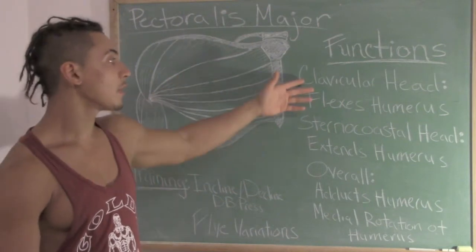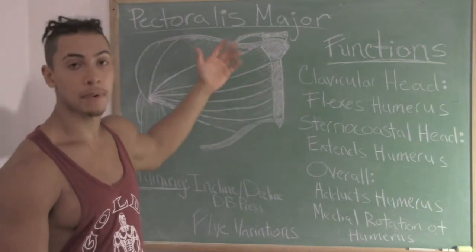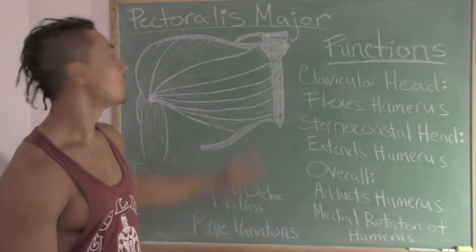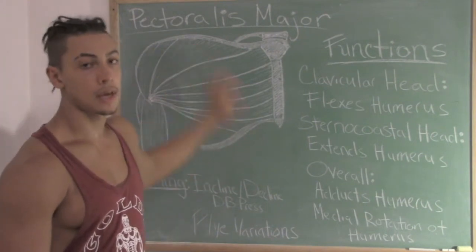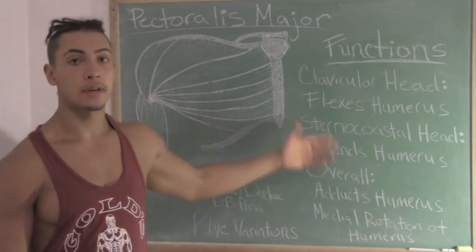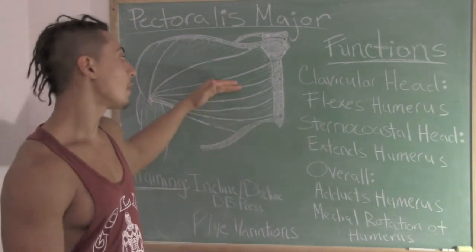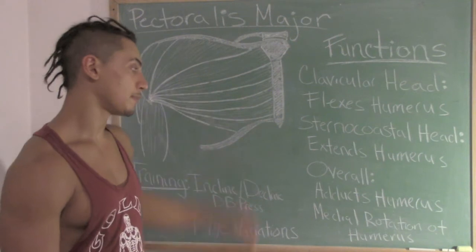The clavicular head of the pectoralis major would be considered your upper chest. The sternocostal head would be considered your middle and lower chest.